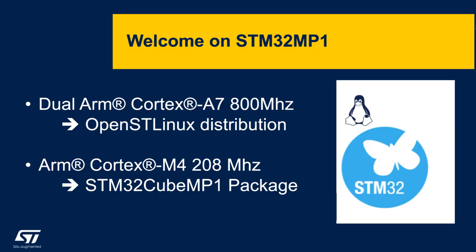Welcome to this presentation of STM32MP1 Wiki. STM32MP1 is a microprocessor with dual Cortex-A7 and a Cortex-M4. It uses a Linux operating system on the A7 side and can run at 800 MHz. The Cortex-M4 is a coprocessor with real-time capability and runs at 208 MHz.